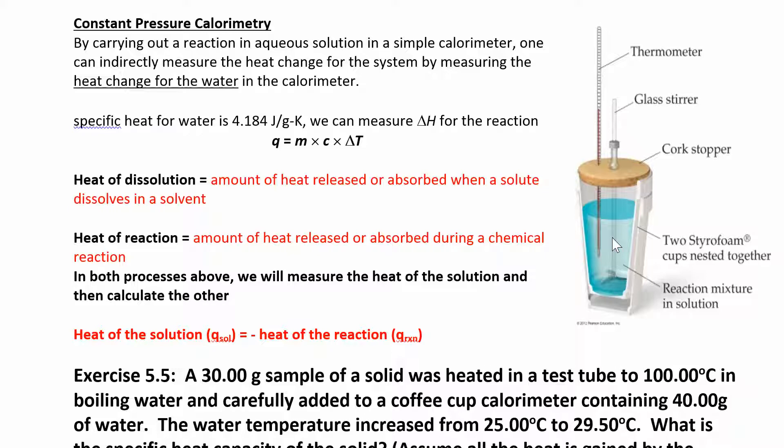What we're gonna do is measure the temperature change, so we have three steps to the lab. First, you're gonna take hot water and cold water, mix them together, and calculate the calorimeter constant—how much heat is being absorbed by the coffee cup itself. Second, you're gonna measure the heat of dissolution by dissolving sodium hydroxide pellets in water, stir it up, and measure the temperature change.